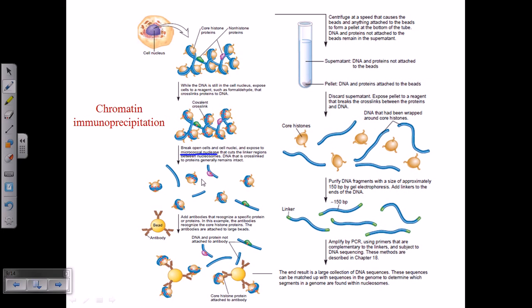We can get histones wrapping around DNA, this kind of structure - these are one type of variety. Another type we can get is simply DNA segments. Another type we can get is DNA segments with non-histone proteins, proteins which can also bind with histones.